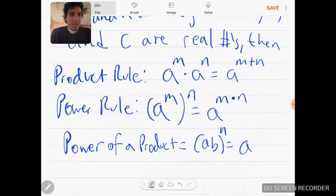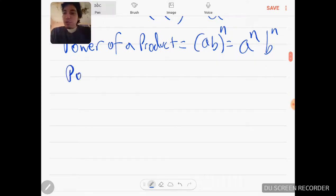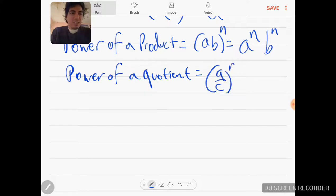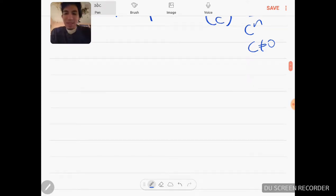Power of a quotient: a over C getting raised to the N would be a to the N over C to the N, where C is not equal to zero because we know why.